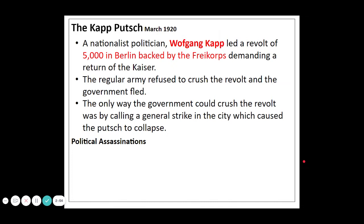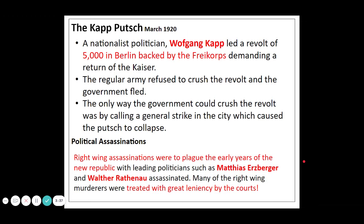They're led by a nationalist politician called Dr Wolfgang Kapp. He leads a revolt, again based in Berlin, backed by the Freikorps — these ex-soldiers who don't really belong to the army anymore. They demand the return of the Kaiser. The regular army refused to crush this revolt because they see the people they're fighting as fellow soldiers. So the only way the government could crush this revolt was to call on a general strike — to use the socialist and communist elements in society to stop work. They call a general strike, grind Berlin to a halt, and the Putsch collapses. But again we've got a series of political assassinations. Leading politicians like Matthias Erzberger and Walter Rathenau are assassinated.